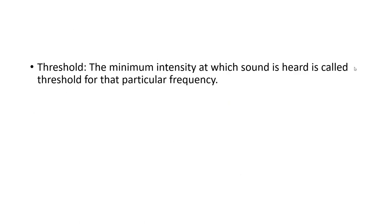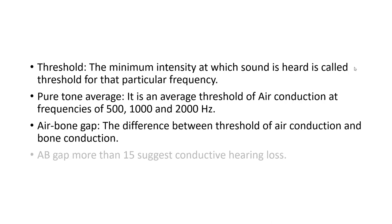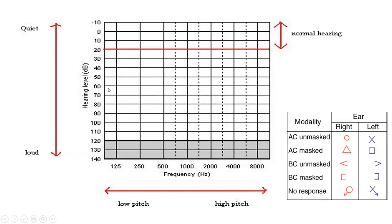We need to understand a few terms: threshold, pure tone average, and air-bone gap. Looking at the audiogram graph: on the x-axis we have frequency in hertz, which refers to the shrillness or sharpness of the sound. Hertz refers to the number of cycles that sound waves make in one second — 125 hertz means 125 cycles per second. We test up to 8000 hertz, but our normal conversational range is roughly 500 to 2000 hertz.